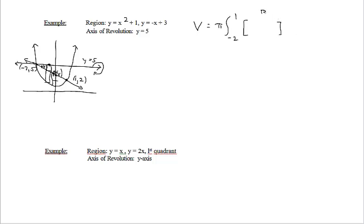We're going to have the outer radius squared minus the inner radius squared with respect to x. Coming back over here looking for our outer radius — what's the distance that represents in terms of x our outer radius? This time it's going to be 5 minus the bottom curve. So we're going to have 5 minus, and it's important to put parentheses in here because we have multiple terms. So 5 minus quantity x squared plus 1.